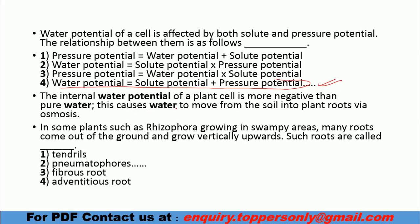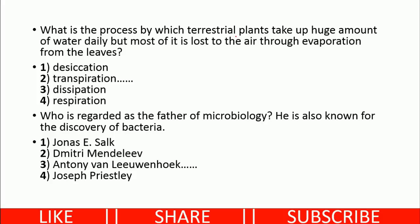The internal water potential of a plant cell is more negative than pure water so that water can move in via osmosis. In some plants such as Rhizophora, roots grow from outside — these are called pneumatophores. The process by which terrestrial plants take up a huge amount of water daily but most of it is lost is called transpiration. The father of microbiology and discoverer of bacteria is Antony van Leeuwenhoek.